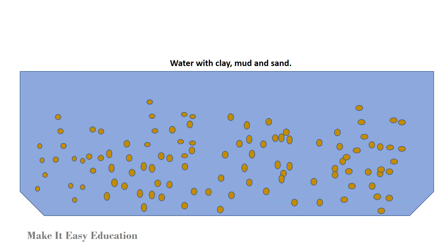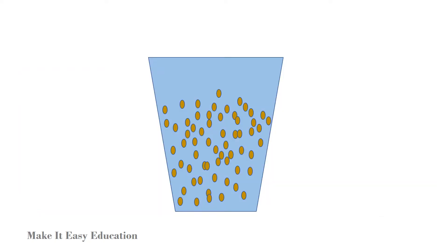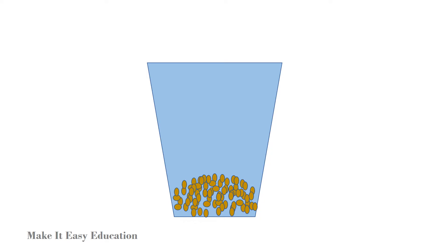Sedimentation and decantation. This method is used to separate clay, mud and sand from the water. First, the water is collected in a container and left undisturbed for a while. It is called sedimentation.